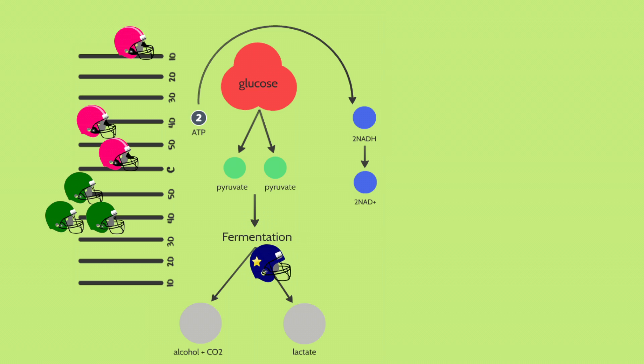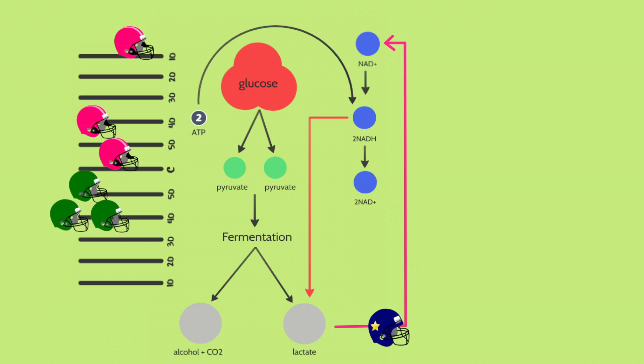The pyruvic acid that was primarily produced after glycolysis is now converted further into lactic acid. The electrons from the formation of lactic acid is converted from NADH and can be transferred to lactate. Therefore, freeing up the NAD+, and regaining more electrons. The team is now moving further along the field, getting closer and closer to their end zone.